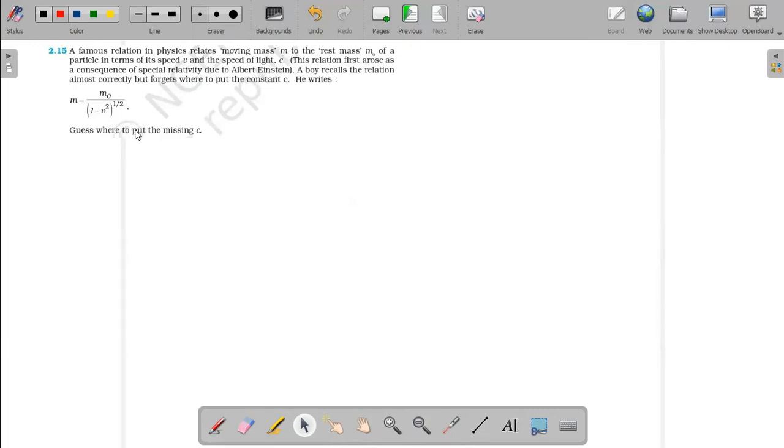If you want to check this question: particle at speed v, and c is the velocity of light. This relation first arose as a consequence of special theory of relativity given by Albert Einstein. It's a known fact.